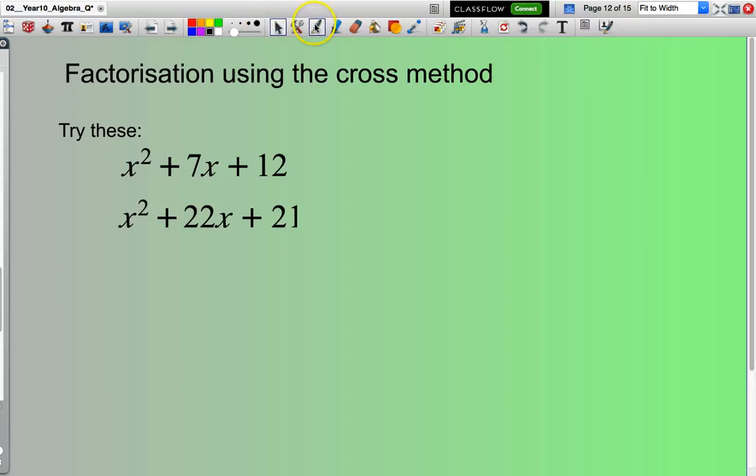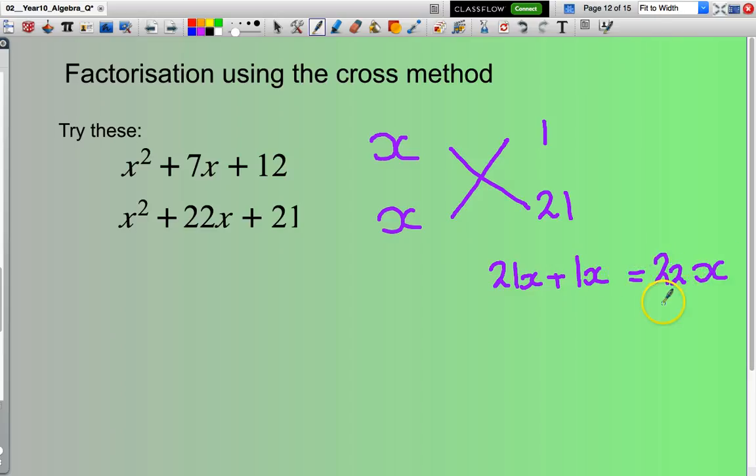Next example: x squared plus 22x plus 21. So straight away I'm starting with x's, I need to draw my crosses. First factor of 21: well I can say 1 multiplied by 21. This will give me 1 multiplied by 21 is 21. Now let's work this one out: 21 times x is 21x plus 1 times x is 1x. So I can say that equals 22x. Now is 22x equal to 22x? Yes it does. So I have my answer and my answer will be x plus 1 all multiplied by x plus 21.